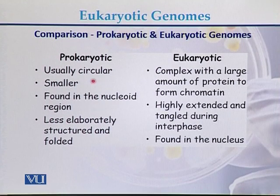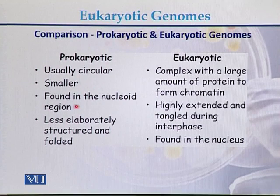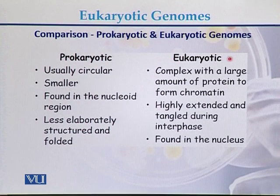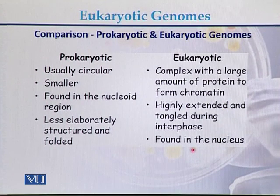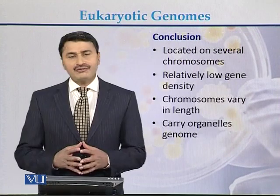This is the comparison between the prokaryotic genome and the eukaryotic genome. In case of the prokaryotic genome, it is usually circular and small in size, found in the nucleoid region, and less elaborately structured and folded. On the other hand, the eukaryotic genome is complex and large in size, with large amounts of protein producing chromatin and chromosome structure. It is highly extended and tangled during interphase and is found in the nucleus.